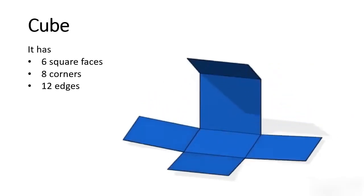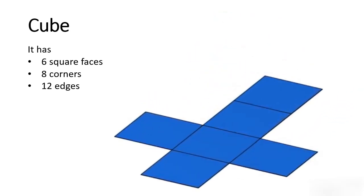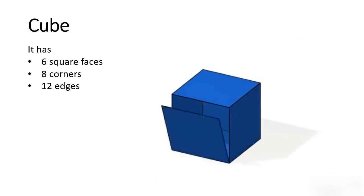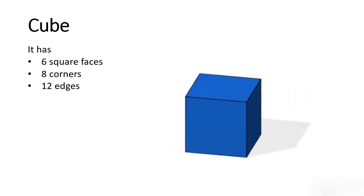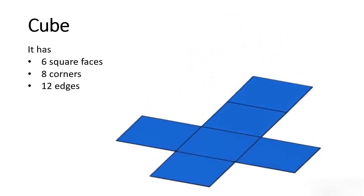A cube has 6 square faces, 8 corners, and 12 edges.